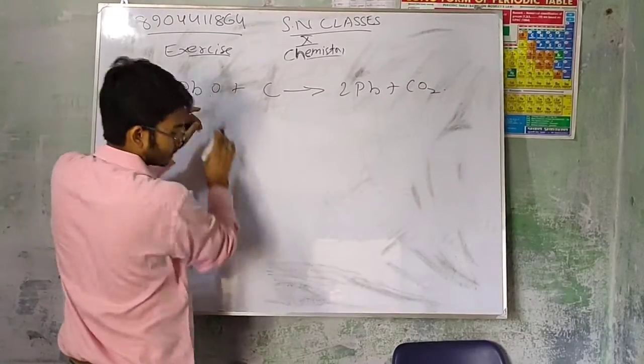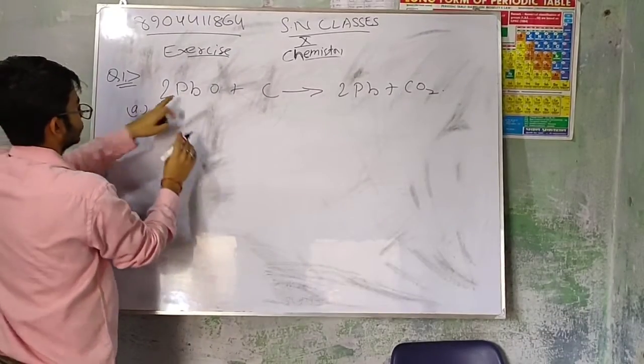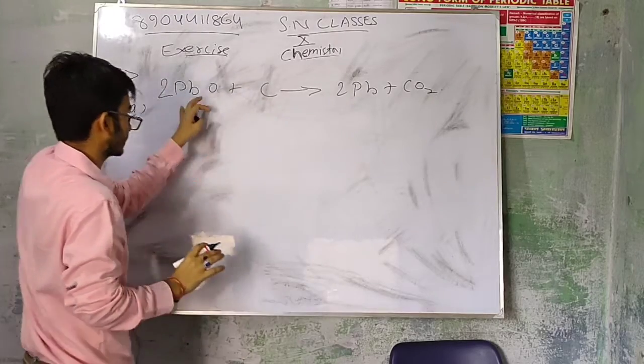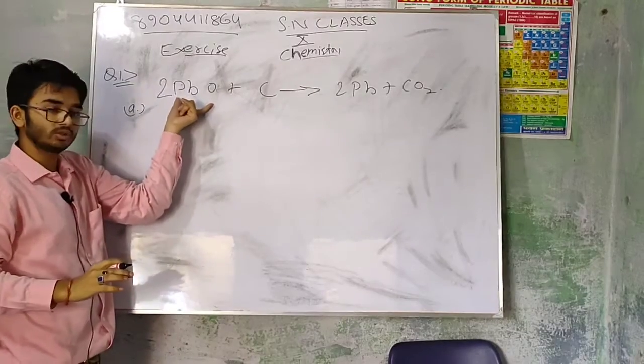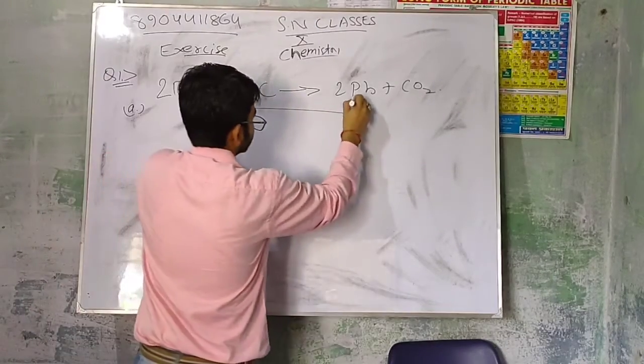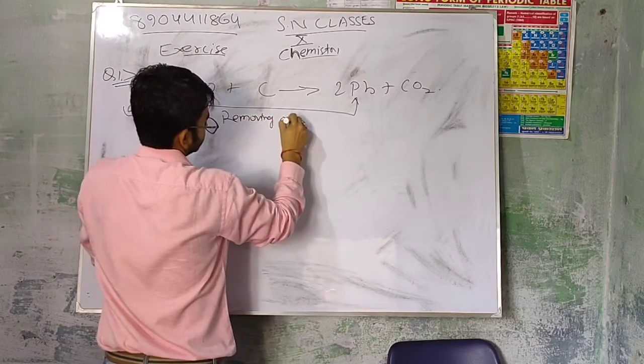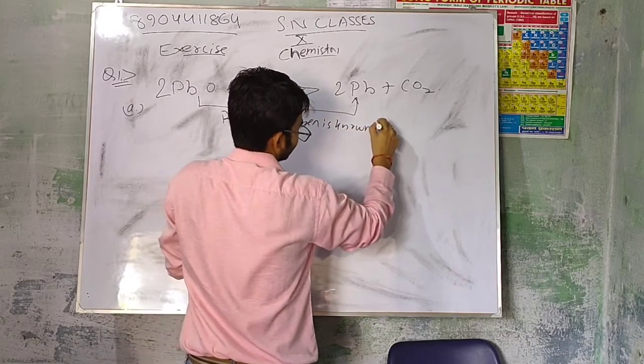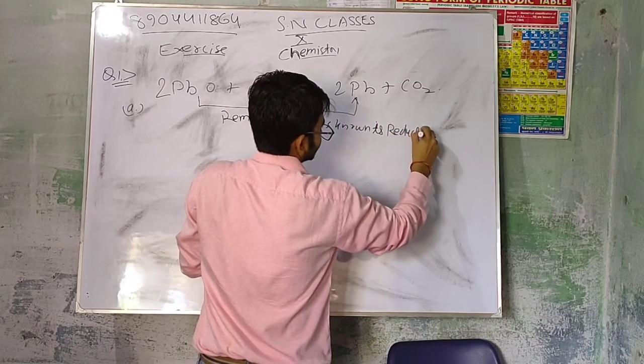Looking at the first option: lead is getting reduced. Lead oxide PbO is becoming Pb, which means removing oxygen. Removing oxygen is known as reduction. Am I right or wrong? So the first statement is true.